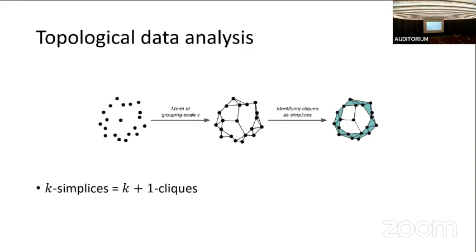How do we build a simplicial complex from this graph? Every clique, we declare it to be a simplex. The k-simplices correspond to the (k+1)-cliques. For example, if I have a triangle, I'll color it in and it becomes a solid two-dimensional face. If I have a clique of four vertices, I fill it up and it becomes a solid tetrahedron, and so on in higher dimensions.